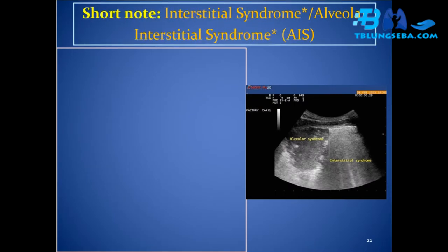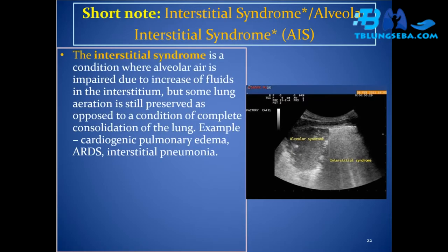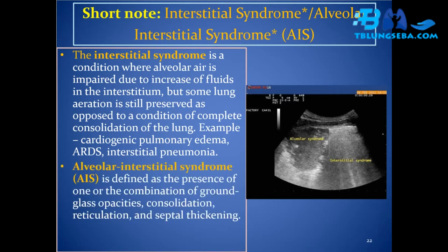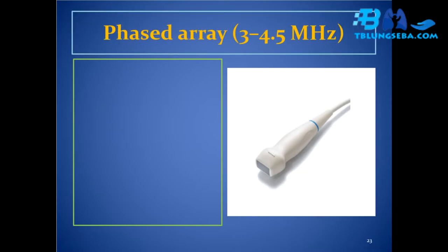Short note — interstitial syndrome and alveolar interstitial syndrome (AIS): interstitial syndrome is a condition where alveolar air is impaired due to increase of fluids in the interstitium, but some lung aeration is still preserved, as opposed to complete consolidation. Examples include cardiogenic pulmonary edema, ARDS, and interstitial pneumonia. AIS is defined as the presence of ground glass opacities, consolidation, reticulation, and septal thickening, or a combination thereof.